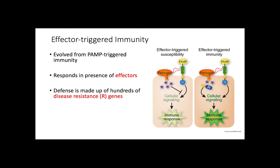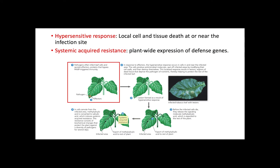Each R gene codes for an R protein that is activated by a specific effector. Once R proteins are activated, signal transduction pathways trigger a local defense called the hypersensitive response and a general defense called the systemic acquired resistance. The hypersensitive response corresponds to a local cell and tissue death at or near the infection site. On the other hand, systemic acquired resistance is a non-specific response that triggers a plant-wide expression of defense genes, and is the result of a localized hypersensitive response.